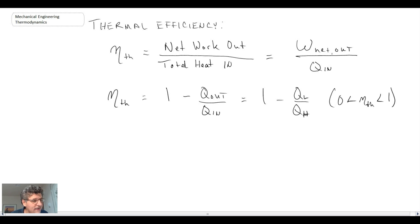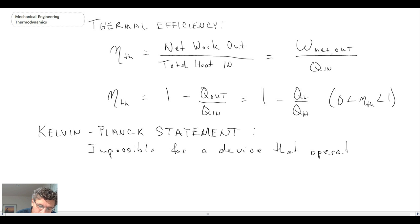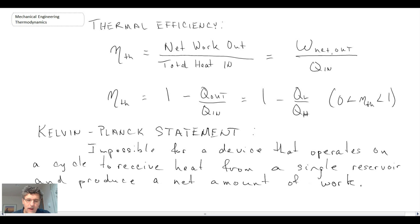Now, one last thing that I want to say about heat engines is the Kelvin-Planck statement. So what the Kelvin-Planck statement says is that it's impossible for a device that operates on a cycle to receive heat from a single reservoir, so from a single source, and produce a net amount of work. What that means is that it needs to have a sink whereby it can reject the residual heat or the waste heat too. So that is the Kelvin-Planck statement and it applies to heat engines.